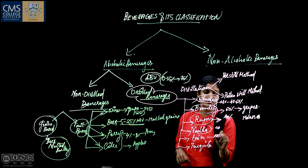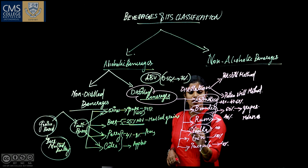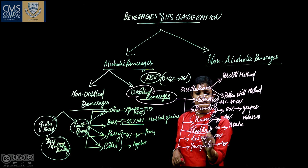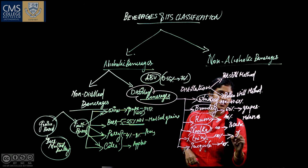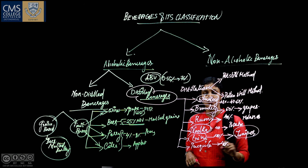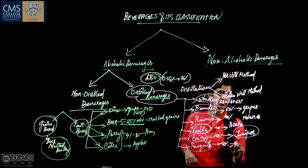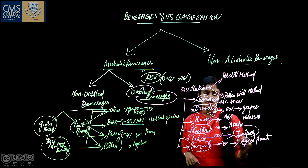Vodka also has 40% alcohol content, gin is also 40%, and tequila is also 40%. The substrate for vodka is potato. For gin, a kind of wild berry known as juniper is used — juniper berries are used for the production of gin. Tequila is prepared from the agave plant; specifically, the leaf of the agave plant is used.